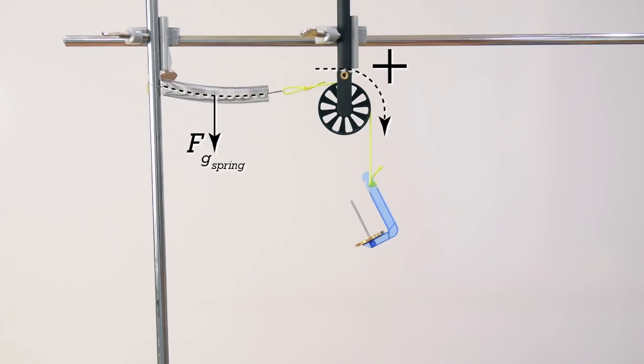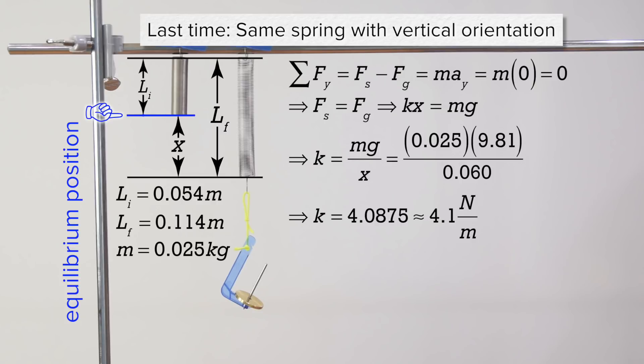But what I want to know is, why did we get a different spring constant than last time? Last time we used the same spring, only it was hanging vertically, and we solved for a spring constant of 4.1 newtons per meter. What gives?